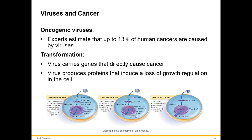Regarding viruses and cancer: experts estimate up to 13% of human cancers are caused by viruses — these are called oncogenic viruses. Transformation is when a virus carries genes that directly cause cancer by producing proteins that induce a loss of growth regulation in the cell.